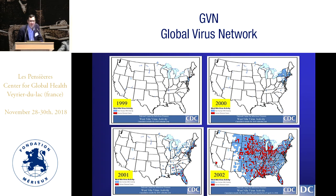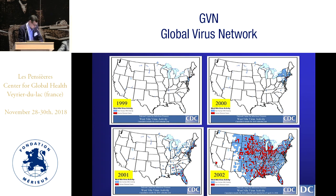In 1999 the virus unexpectedly showed up in New York City, causing 62 cases of severe encephalitis. Initially it was attributed to St. Louis encephalitis due to serologic cross-reactivity between the two viruses, but in retrospect there were circumstantial clues — including large bird die-offs occurring at the same time as the encephalitic cases. In 2000, there were actually fewer human cases (21), but a greater geographic distribution. Areas in blue represent animal activity — predominantly mosquito and bird — and red areas represent human activity. By 2001 there were essentially two epidemic foci: one in the northeast and one in the southeast, reflective of bird migratory patterns.